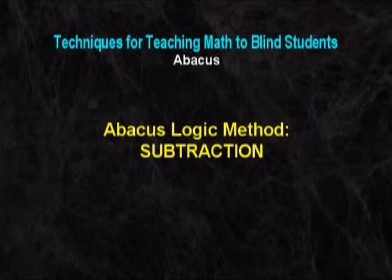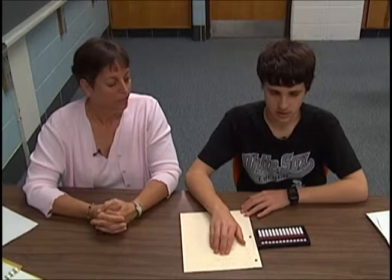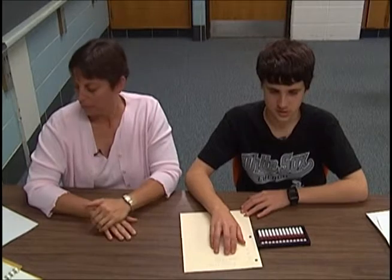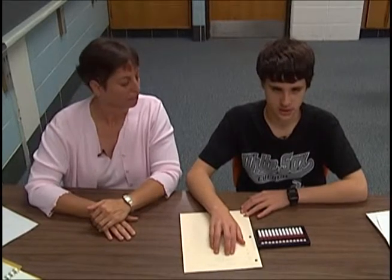Part 2, Abacus Logic Method: Subtraction. The next one is a subtraction problem, and it's 167 minus 86.